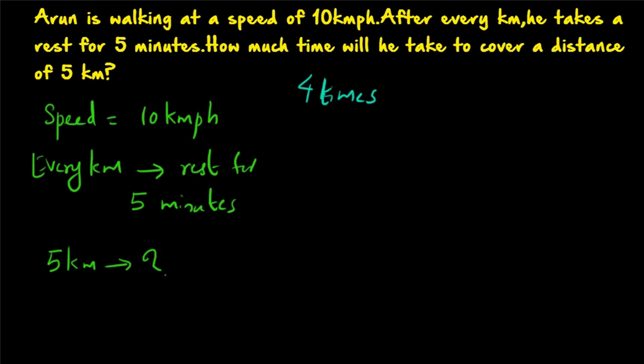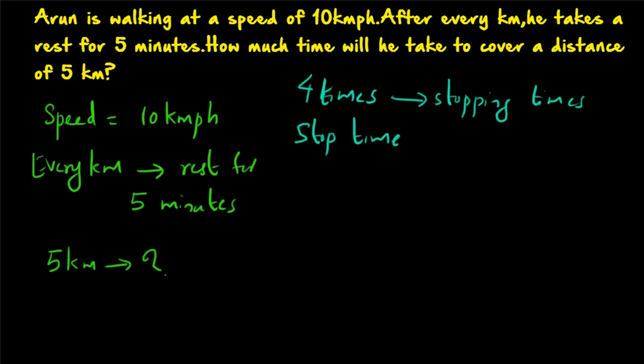So 4 times — after the end of every km. After the first 1 km he will take rest for 5 minutes, then after 2 km, after 3 km, and after 4 km. After that he will be completing the 5 km, so no rest is needed at the end. Therefore 4 times he will be taking rest, and stopping time corresponds to 4 stops.